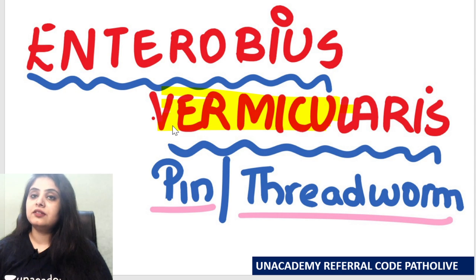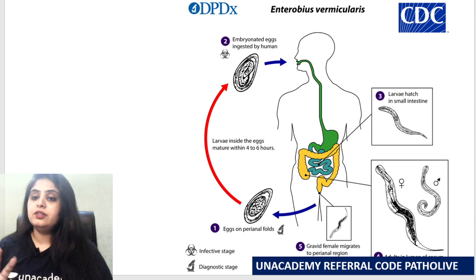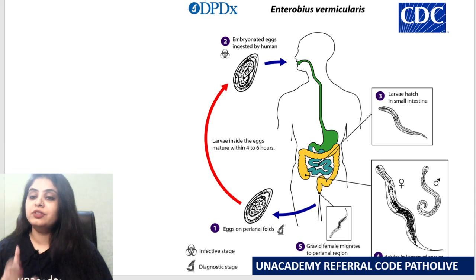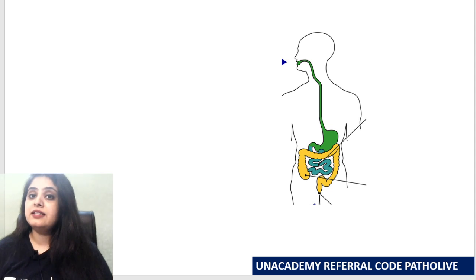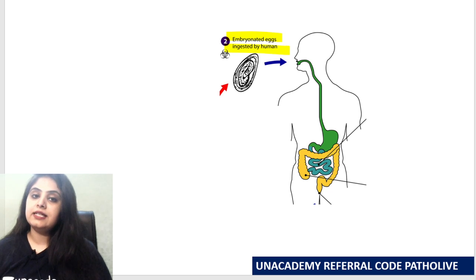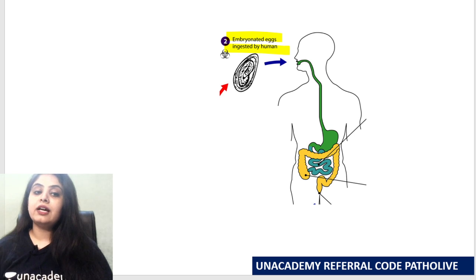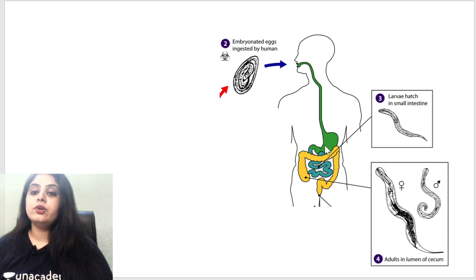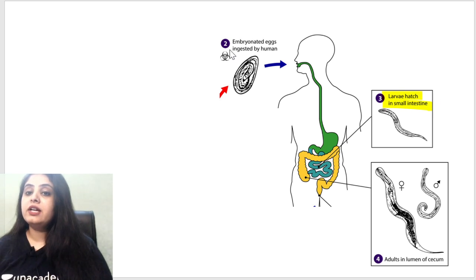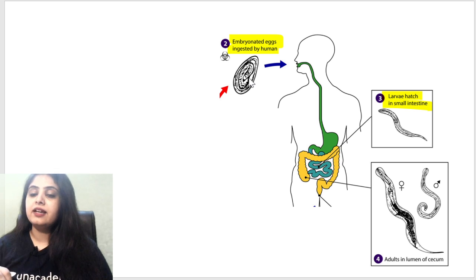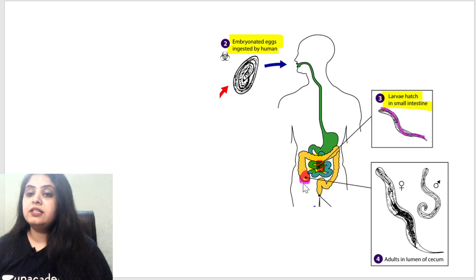Let me show you what the life cycle looks like. This organism has one host — humans — just like yesterday's Trichuris trichiura. Here is the human, and we get the infection by ingestion of embryonated eggs via contaminated food and water. Once ingested, the eggs go into the small intestine and the larva hatches out. After hatching, adult worms form and go to sit in the lumen of the cecum.